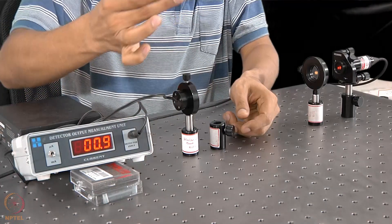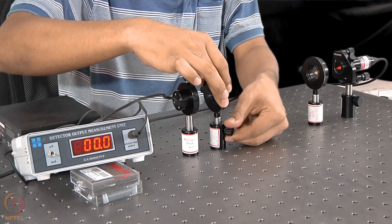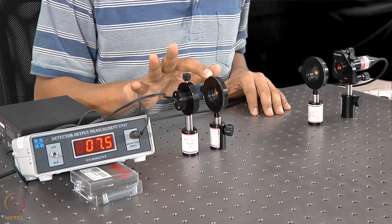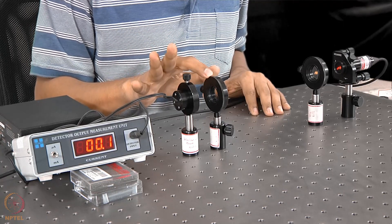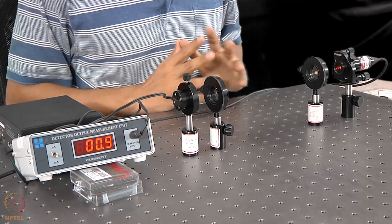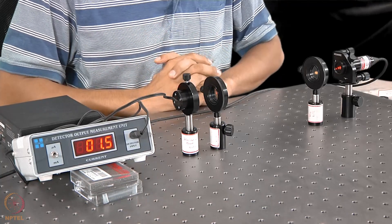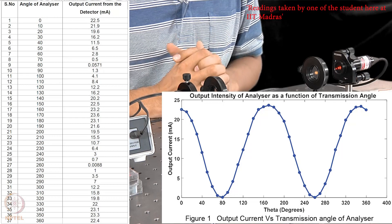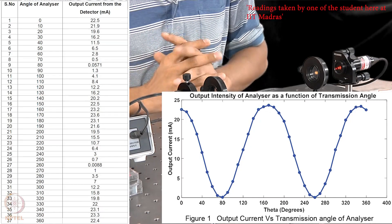Now I can place my analyzer — the second polarizer I will call it as analyzer. You can see that as I am changing the pass axis of the analyzer, you can see the change in intensity of the laser beam. So now if you plot this angle of this polarizer versus the current, you will get a cos² fit for the data, and that will be the verification of Malus's law. In the table here on the screen, we will present you the data recorded, and the corresponding plot shows the cos² variation of the transmitted intensity of light.